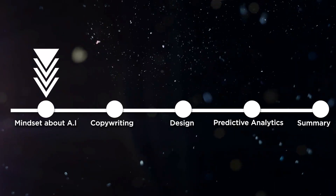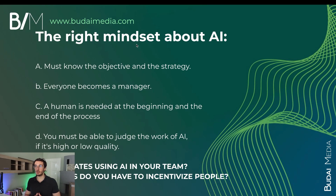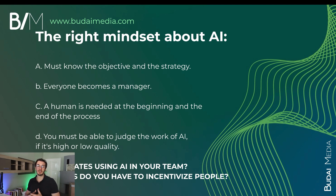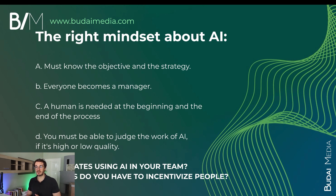First of all, here's the right mindset about AI when you use it for creatives. First, you must know the objective and the strategy. If you behave like a headless chicken, it doesn't matter how much you use AI or optimize processes — you still don't know where you're going. You really want to set the objective and have the strategy, because that's a more complex challenge that requires humans.